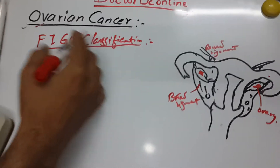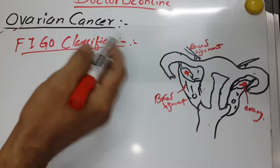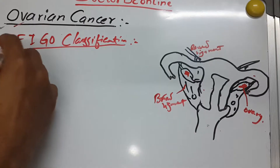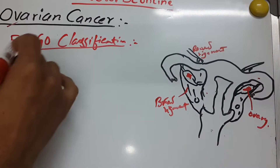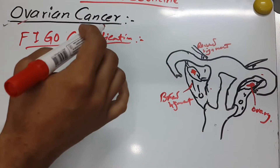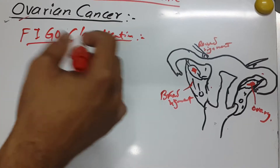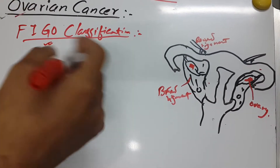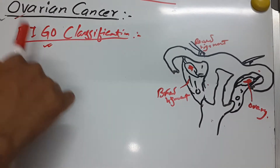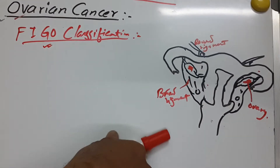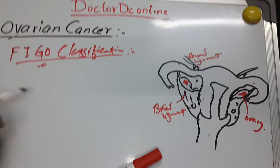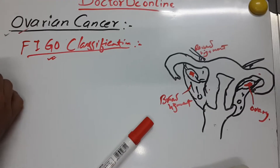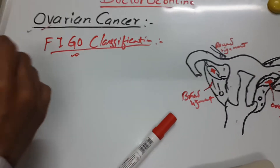In the previous video we discussed classification according to pathology, but the international FIGO classification is also very important. Most MCQs are made according to this FIGO classification, and even treatment is based upon it. So let's talk about FIGO classification.